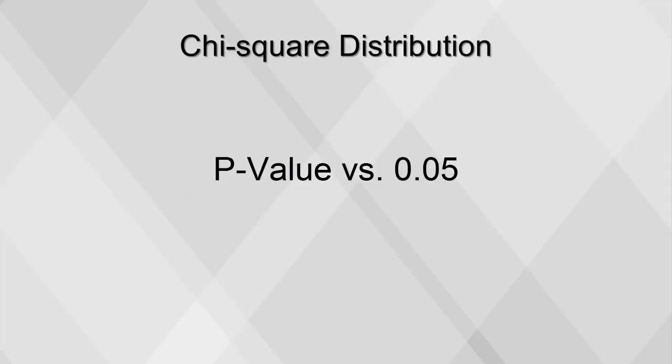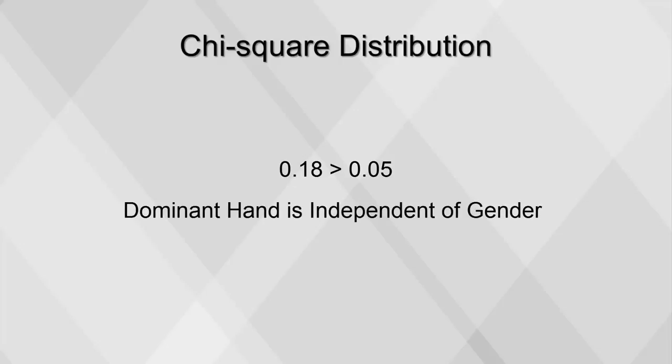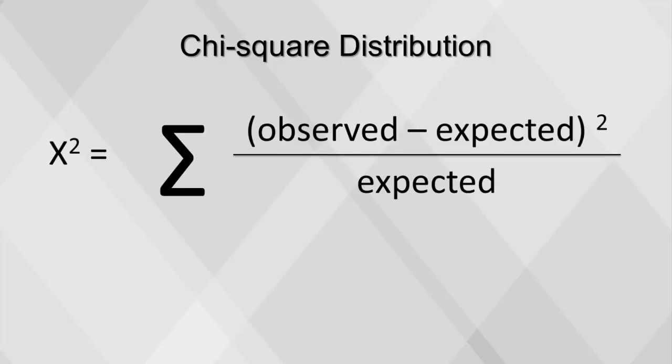A common way to evaluate the p-value is to compare it to 0.05. If the p-value is less than 0.05, we say there is an association between the two variables that is statistically significant. In this example, our p-value is 0.18, which is greater than 0.05, so we conclude that the dominant hand variable is independent of gender.